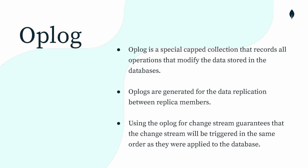So let's see what Oplog actually is. Oplog is a special capped collection that records all the operations happening on your database. Any create, update, or delete operations would be stored into Oplog, and it's the same thing used for replicating your source data into your target data in a MongoDB replica set environment. Using Oplog for Change Stream guarantees that whatever changes happen will be triggered in the same order in which they're actually happening on your source system, so there's no chance of missing any order of operations.